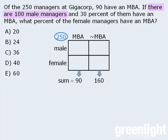Next, we are told that there are 100 male managers, so the sum of those two boxes must be 100. Since there are 250 managers altogether and 100 are male, the remaining 150 managers must be female, so the sum of those two boxes must be 150.